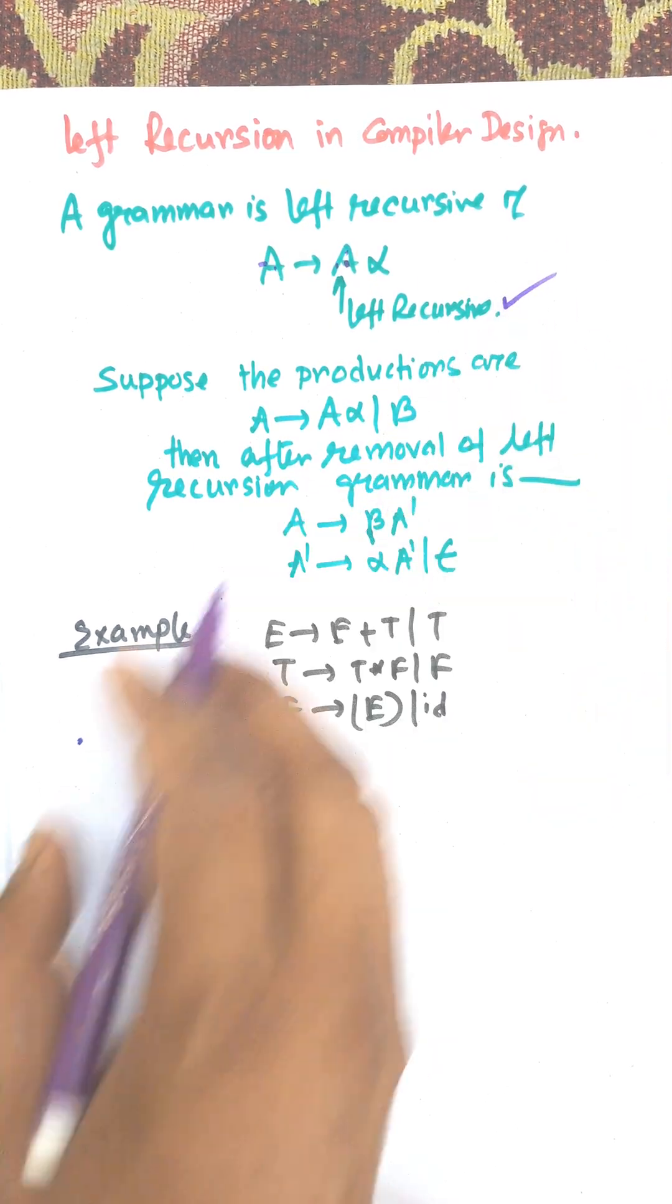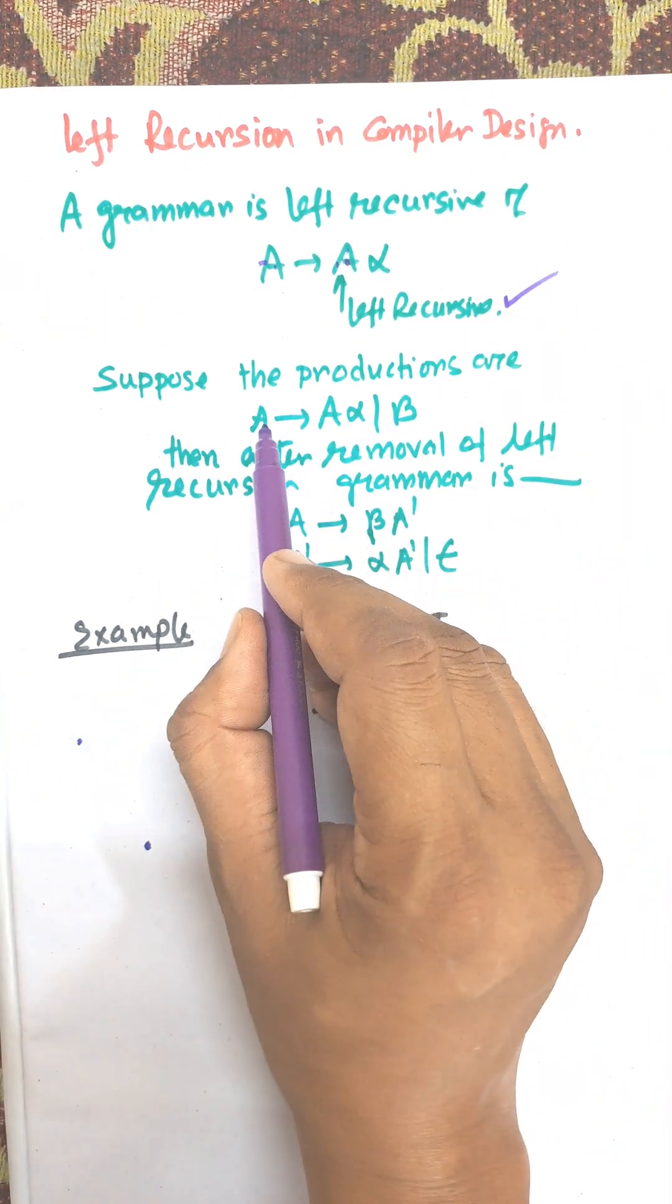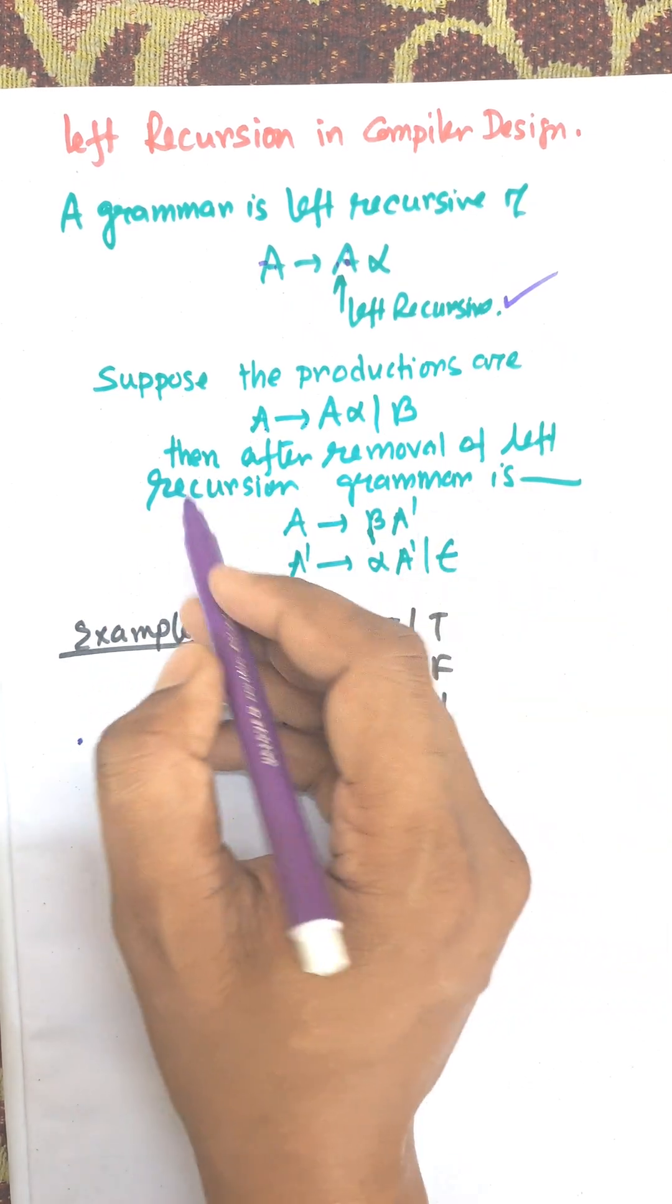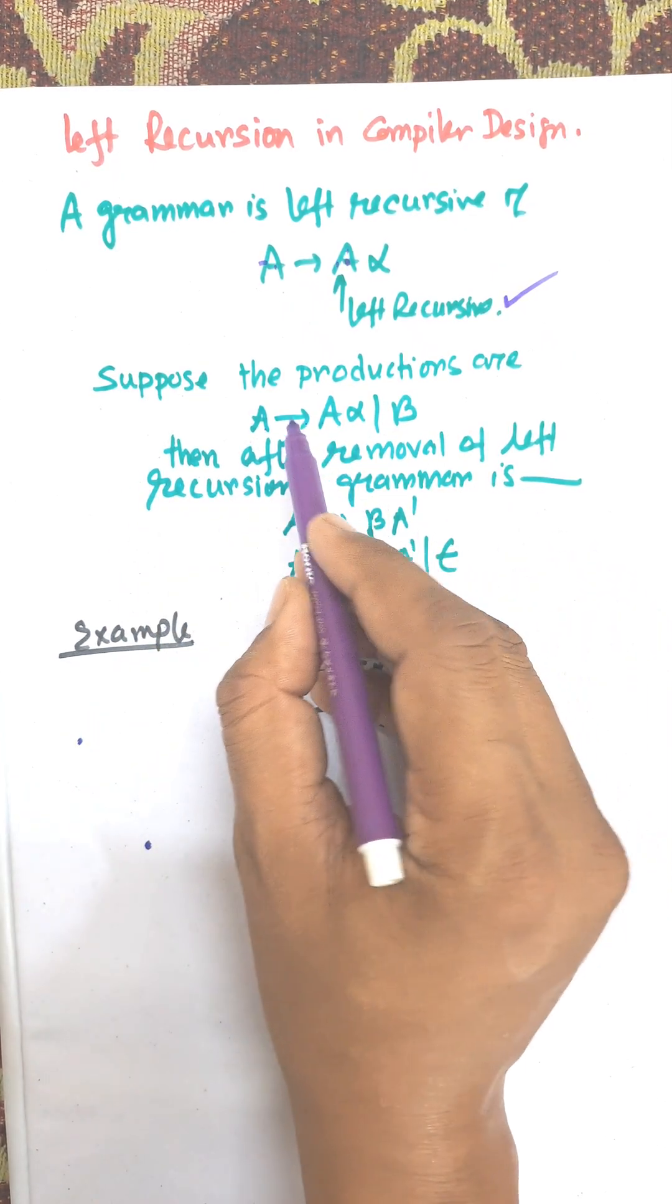We need to remove this left recursion. Suppose the production is A → Aα | β. Then the grammar after removal of this left recursion A will be...